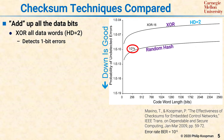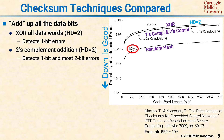If you have a little more computation power, and especially if you're running in software where addition and XOR cost the same typically, you can use a two's complement addition. That gives you HD2, but with a little bit better — where lower is better — undetected error probability. The reason for this is your performance will increase the more you mix the bits together of the data word to make it harder for a single bit flip to go unnoticed. Two's complement addition checksum detects all one-bit errors, and most but not all two-bit errors.